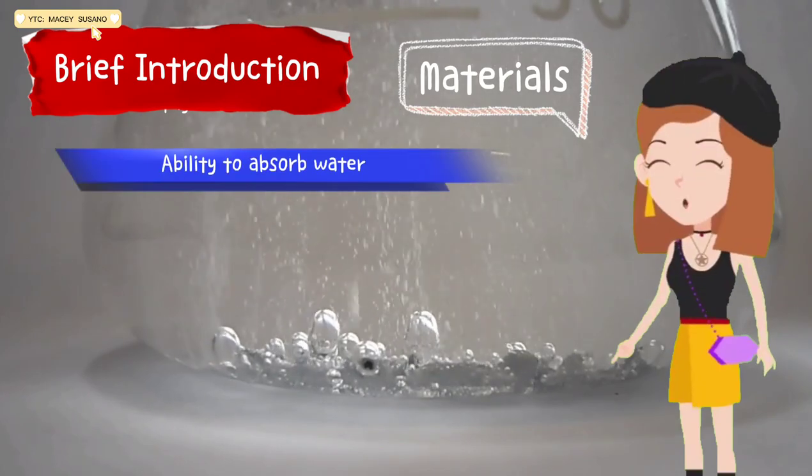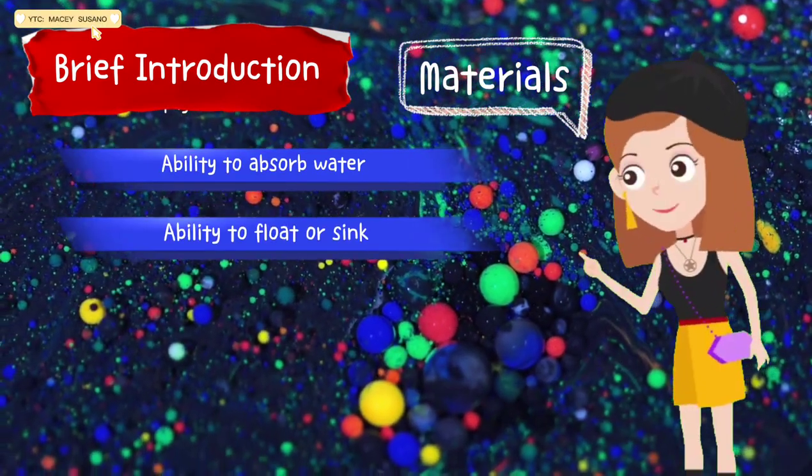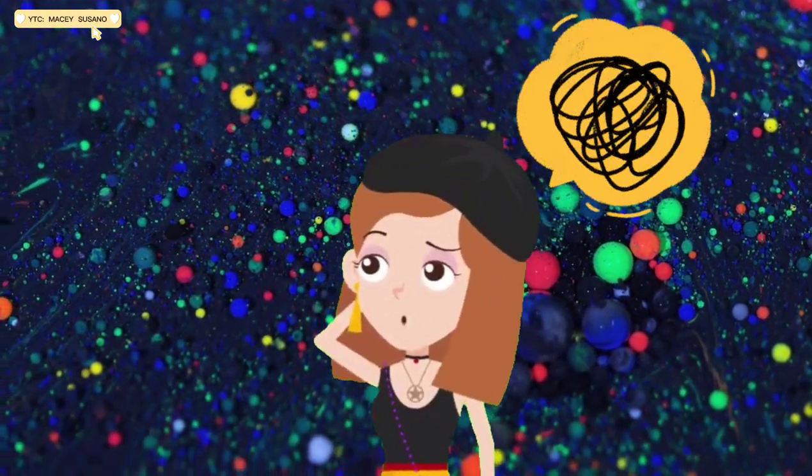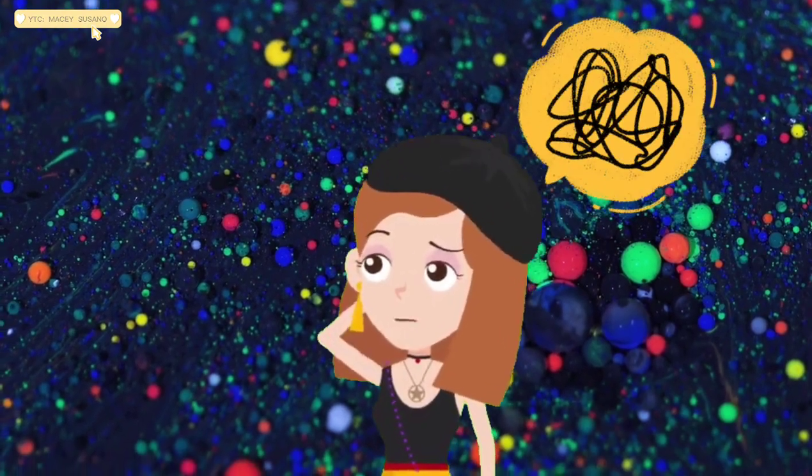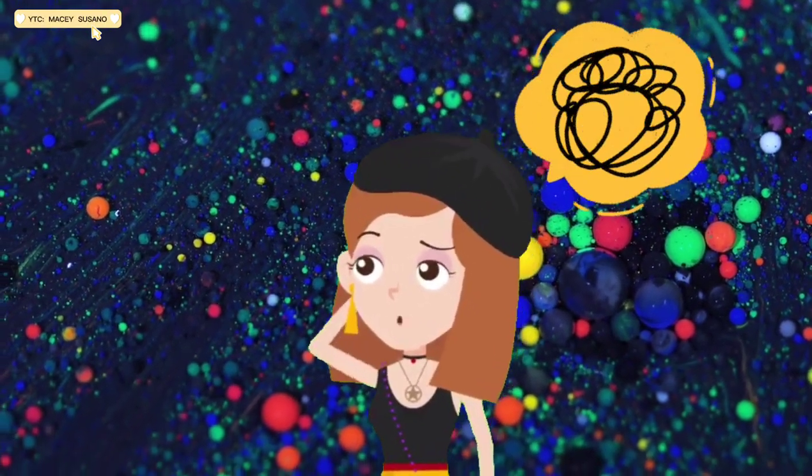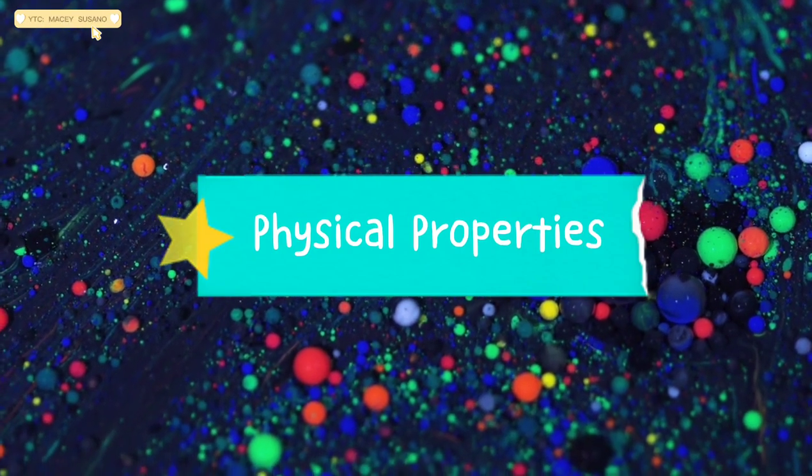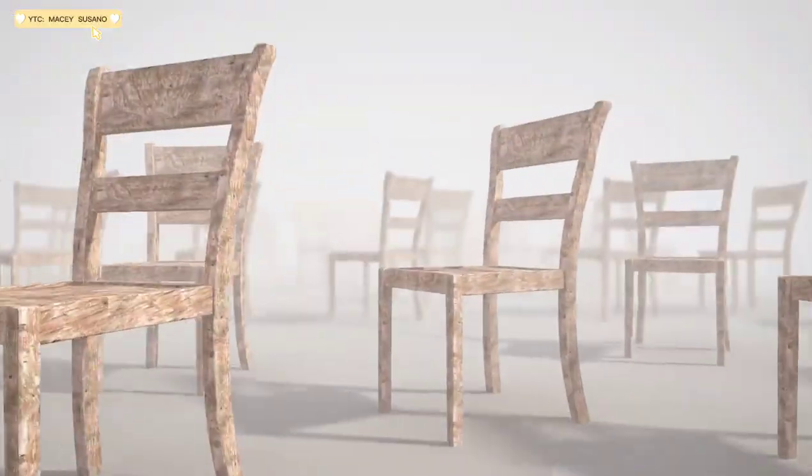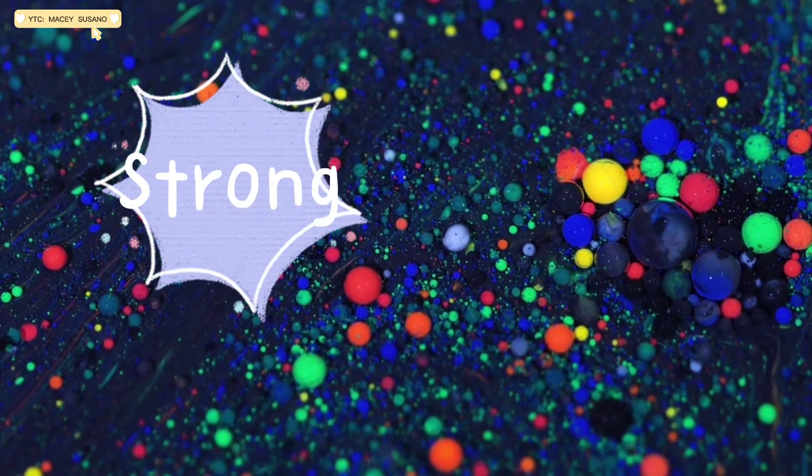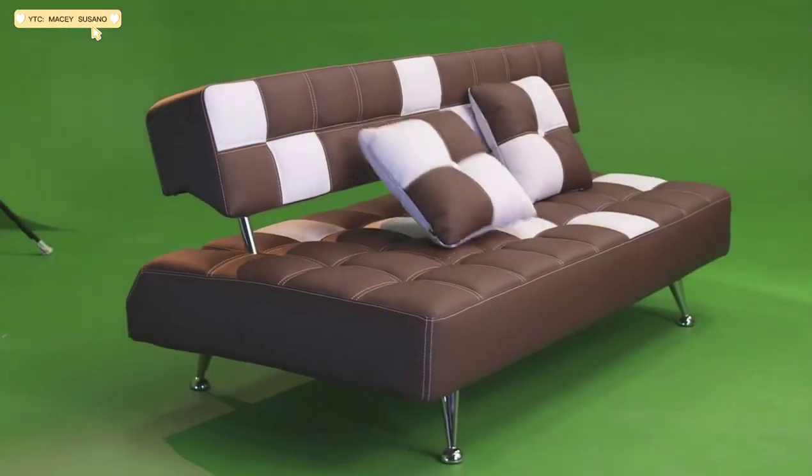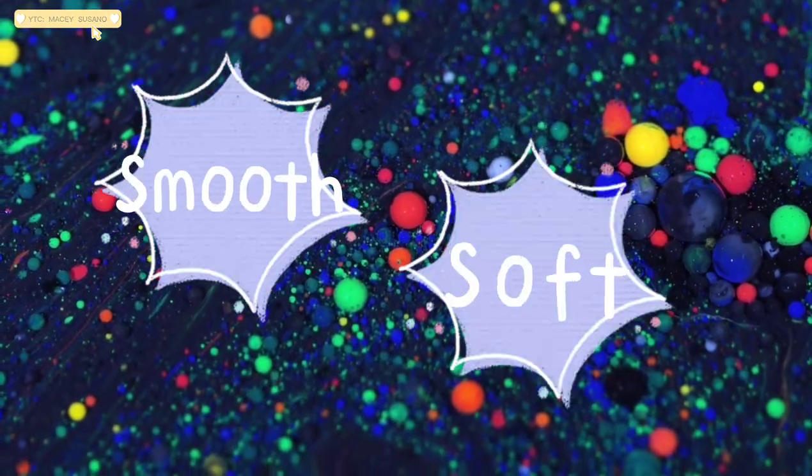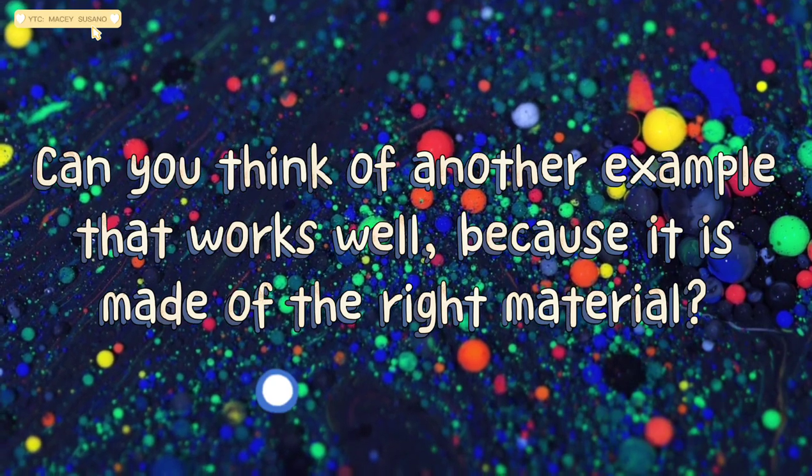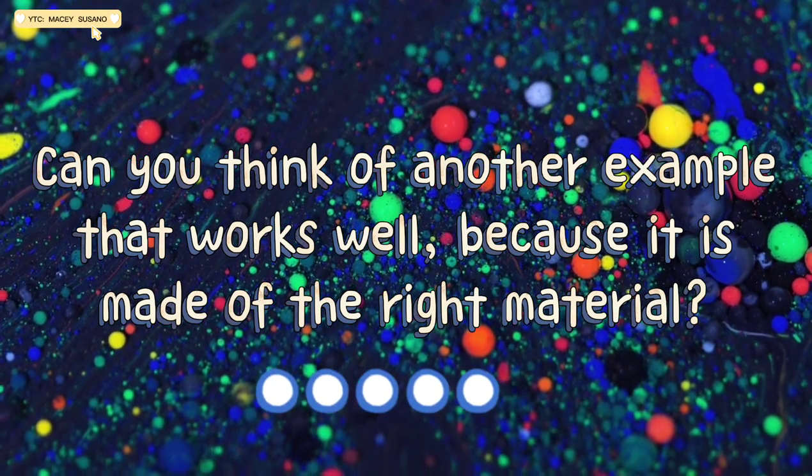Materials may also be grouped according to their ability to absorb water, ability to float or sink, and whether they decay or not. Why is it important to study or learn different materials and understand their physical properties? Physical properties decide how materials are used. We use wood or metal in making a bed or chair because these materials are strong and hard. Pillowcases and blankets have to be smooth and soft. That's why we use fabric and cloth. Can you think of another example that works well because it is made of the right material?